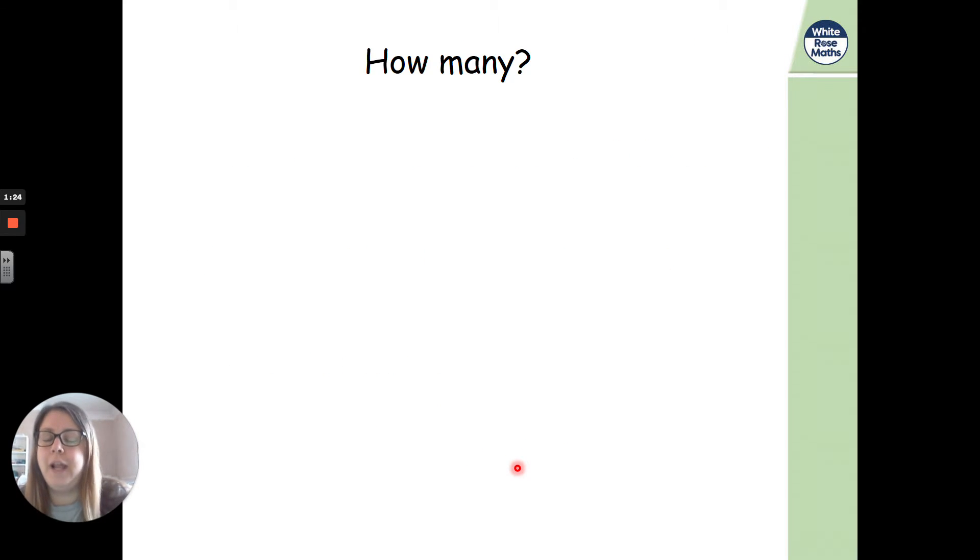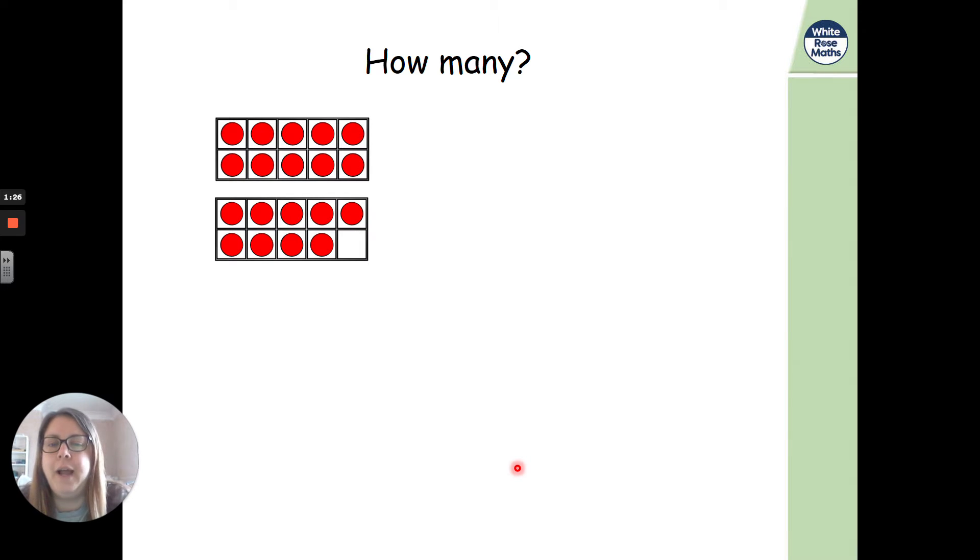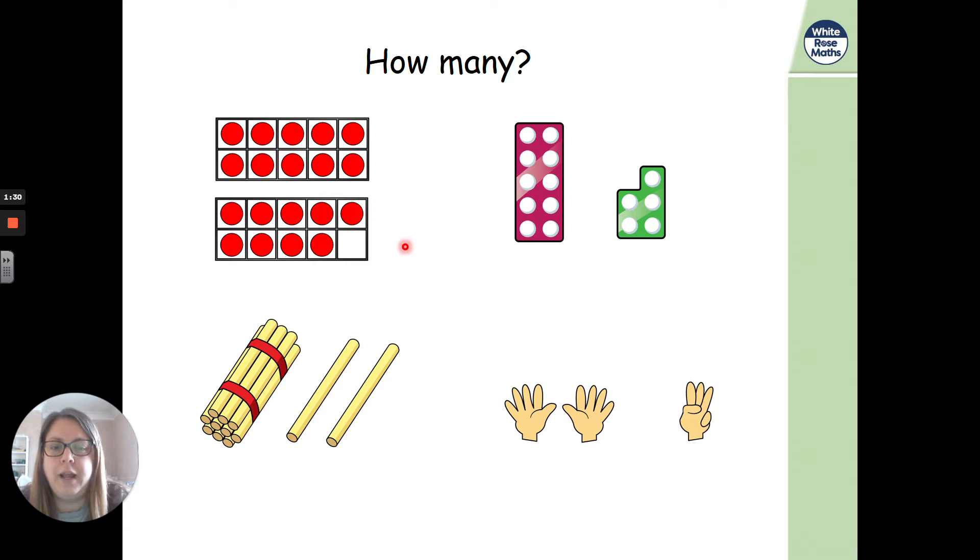So, let's have a look at how many we've got today then. How many are here? So what I'll do is I'll pop them all on, and then pause the video, look at how many there are here, how many there are here, how many there are here, and how many there are here. Write the numbers down if you want to, and then when you press play, the answers will come on the screen.